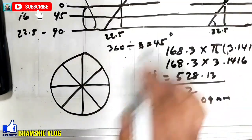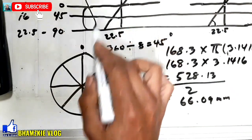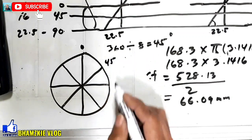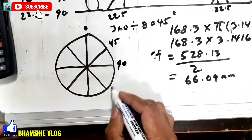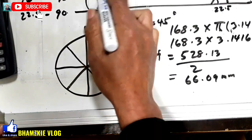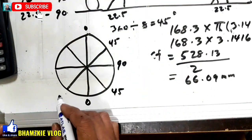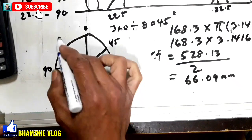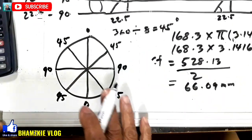So, halimbawa, ito yung ating 0 — yung sa center natin. So, dito sa sunod na line is 45 degree. Ito yung ating 90. Pagdating dito, 45 degree, pabalik-balik lang, yung opposite nitong ating 0 doon sa likod, is 0 din. So, dito is 45, 90, 45. Ganyan lang, mga kamital. Kaya, mayroong 45 yan.